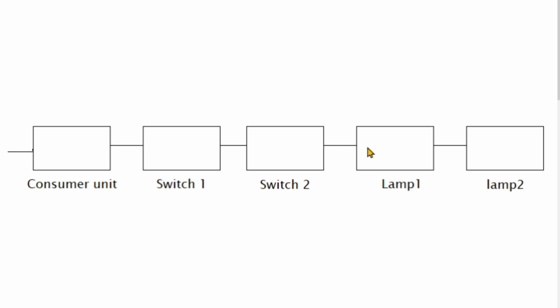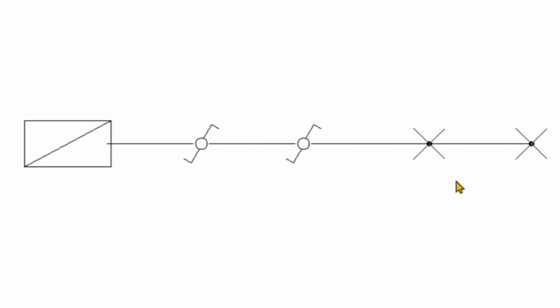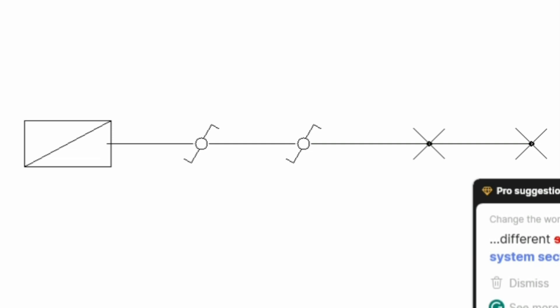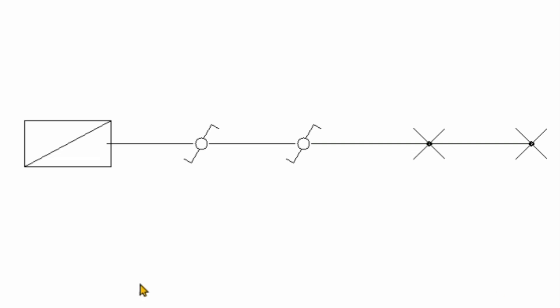The only difference in a single line diagram is that we are going to use symbols in place of the blocks, and then a single line for the same scenario. Single line diagrams are used to show the power flow in power distribution systems, and they are also used to simplify complex systems such as electrical panels and power plants. Here is a single line diagram for the scenario given.